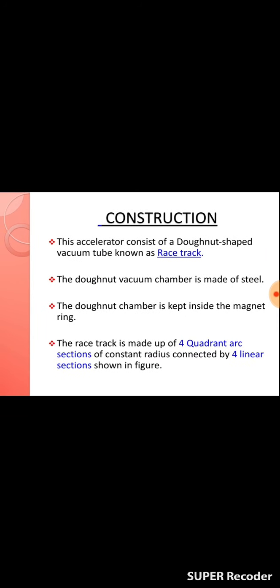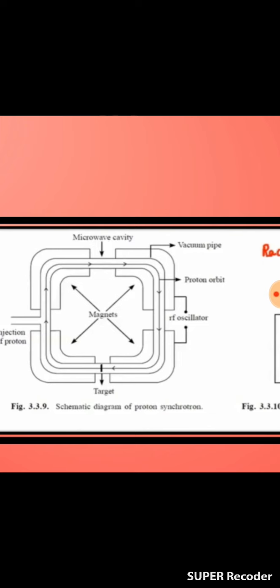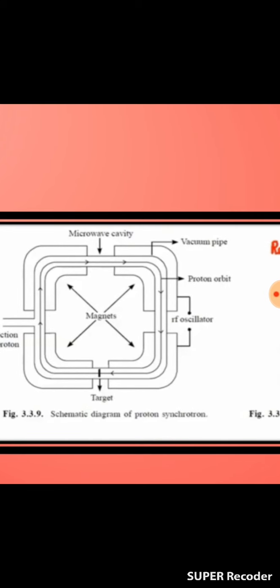Next we discuss the construction of the PS. This accelerator consists of a definite shaped vacuum tube known as the race track. The race track is made up of four quadrant arc sections of constant radius connected by four linear sections, as shown in the figure. These linear sections are used for injecting, accelerating, and ejecting the protons. The four quadrant arc sections are placed in between C-shaped electromagnets. Protons of energy 1 to 10 mega electron volts are obtained from a linear accelerator or van de Graaff generator.